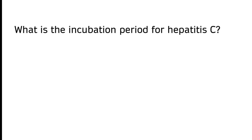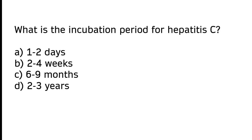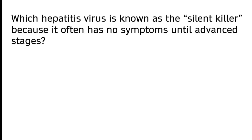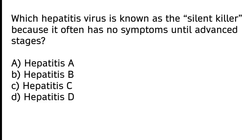What is the incubation period for hepatitis C? A) One to two days, B) Two to four weeks, C) Six to nine months, D) Two to three years. The correct answer is option B — the incubation period for hepatitis C is two to four weeks.